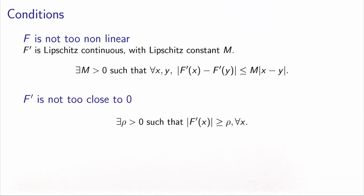The second condition is related to the definition of the algorithm. During the algorithm, we have to divide by the derivative of f, and if it is zero — or close to zero — it will not work well. So the second condition says that the derivative of the function must be bounded away from zero: there exists a constant rho, which is strictly positive, such that the absolute value of the derivative is greater than or equal to rho for any x, so that we can safely divide by the derivative of f.